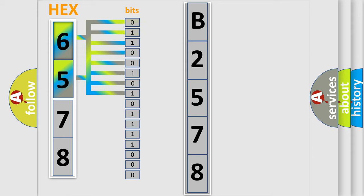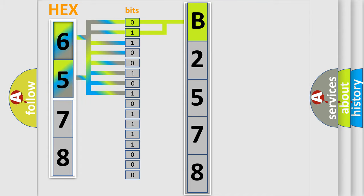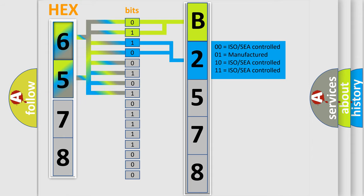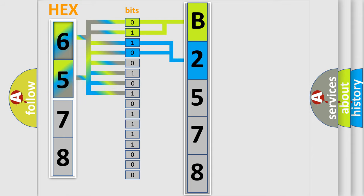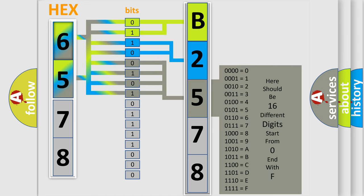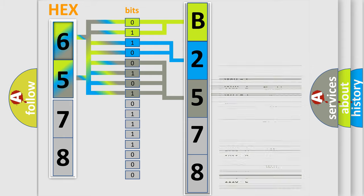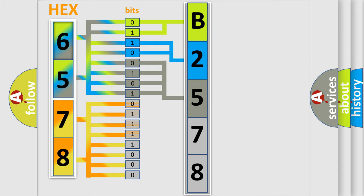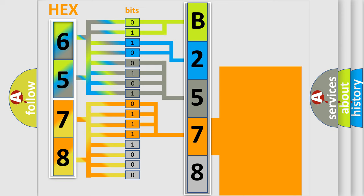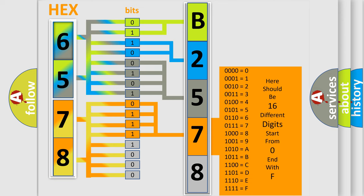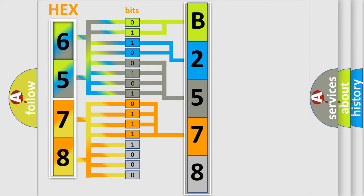One bit is the basic unit that each computer works with. The bit has two logical states: zero, low level, and one, high level. By combining the first two bits, the basic character of the error code is expressed. The next two bits determine the second character. The last bits of the first byte define the third character of the code. The second byte is composed of a combination of eight bits. The first four bits determine the fourth character, and the last four bits define the fifth character.